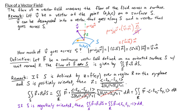If S is negatively oriented, then the normal vector would point downwards. So we would calculate the flux of f over S by doing the double integral of f dot the vector fx, fy, negative 1, dA over the region R.